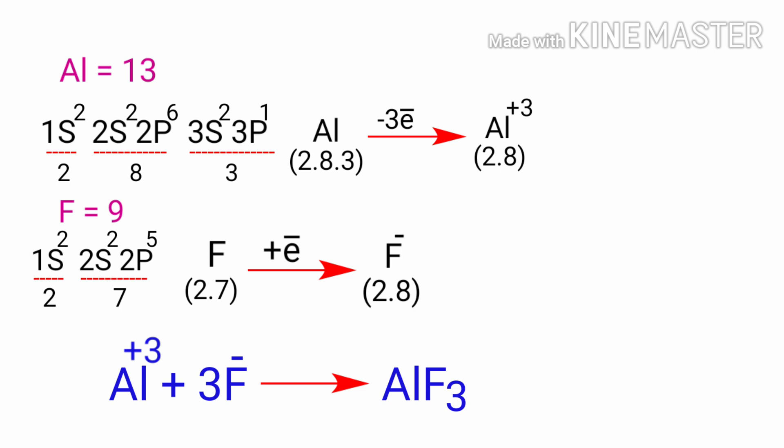The four ions now satisfy the octet rule and have complete outermost shells. These transactions can normally and take place simultaneously.